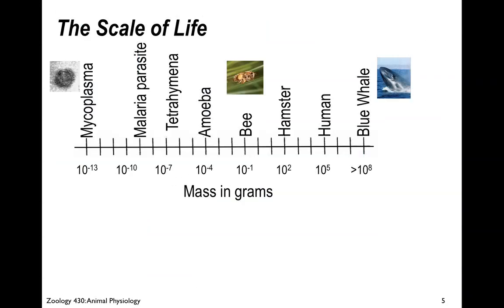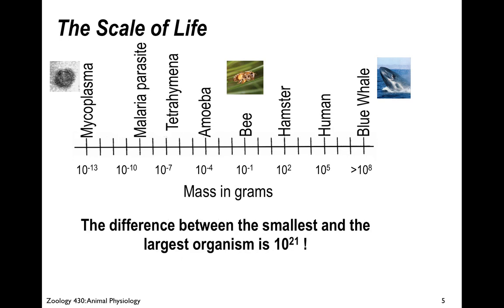The scale of life spans a huge range — from the smallest single-celled organism at about 10 to the minus 13 grams, to the blue whale at over 10 to the 8th grams. The difference is 21 orders of magnitude. That's huge.